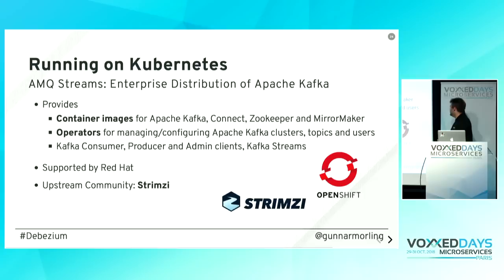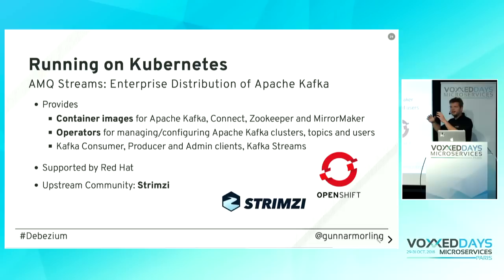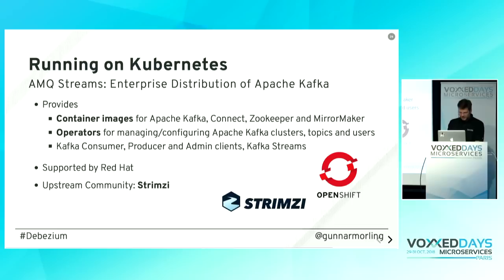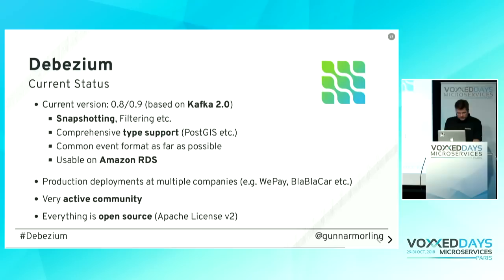I set up Kafka on OpenShift using the Strimzi project — another Red Hat project that makes it easy to deploy Kafka on Kubernetes or OpenShift. Strimzi provides container images for Kafka, Kafka Connect, ZooKeeper, and so on. More importantly it provides Kubernetes operators: you deploy a custom resource describing your desired Kafka cluster and the operator takes care of setting it up. You can also manage topics and users. There's a supported Red Hat version called AMQ Streams, but Strimzi is the community upstream project.